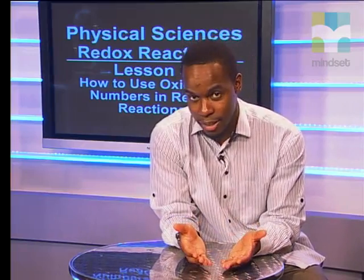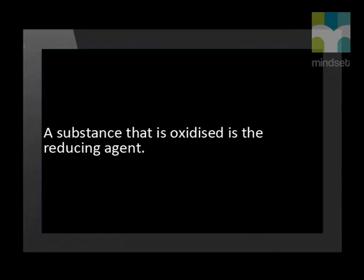Let us summarize what we have learned. If an atom becomes more positive, it means that it has lost electrons and therefore has been oxidized. The substance that donates its electrons causes the other substance to gain electrons. Therefore, the substance that loses the electrons is the reducing agent — a substance that is oxidized is the reducing agent.